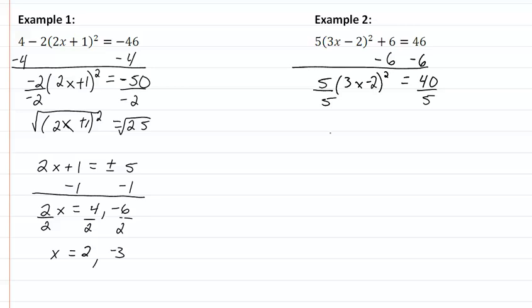So now we have 3x minus 2, quantity squared, equal to 8. Again, our exponent is 2, so we're taking the square root. So now we have 3x minus 2, equal to plus or minus. The square root of 8 is 2 square root 2, when it's simplified.